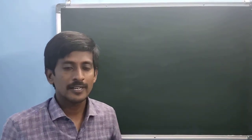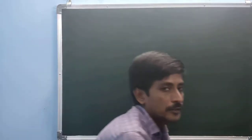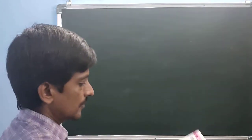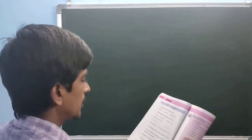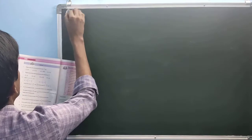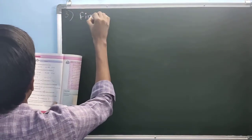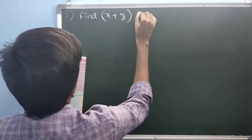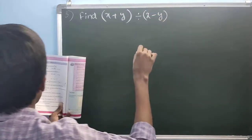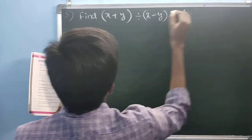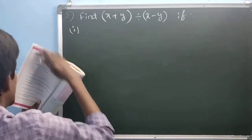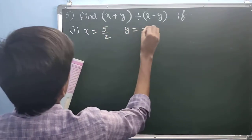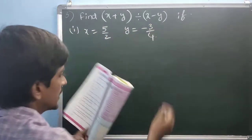Good morning students, welcome to online class. Today I am going to explain exercise 1.3, third sum. Already two sums are completed. What is the third sum? Find x plus y by x minus y. The first one: x equals 5 by 2, y equals minus 3 by 4.